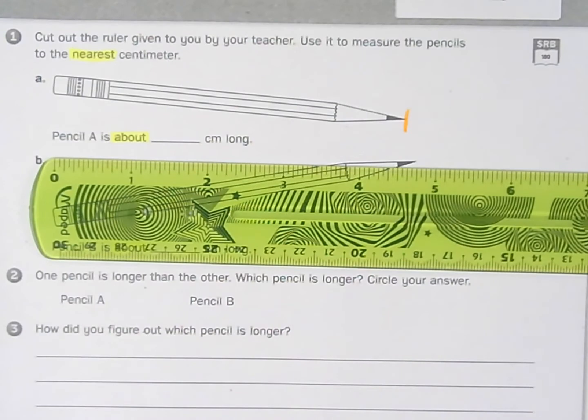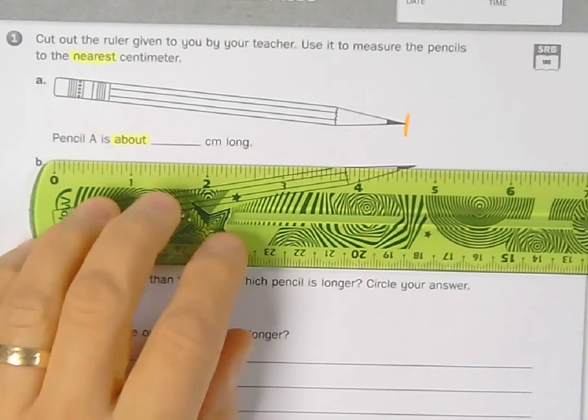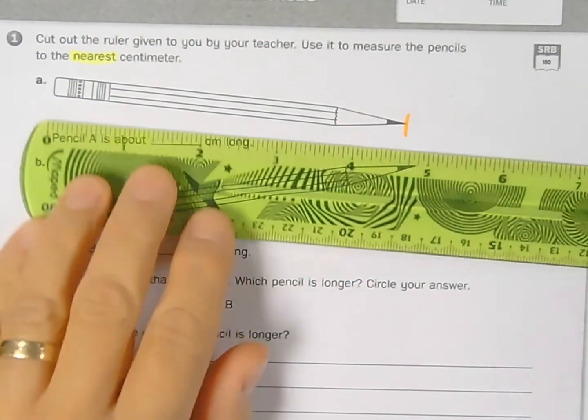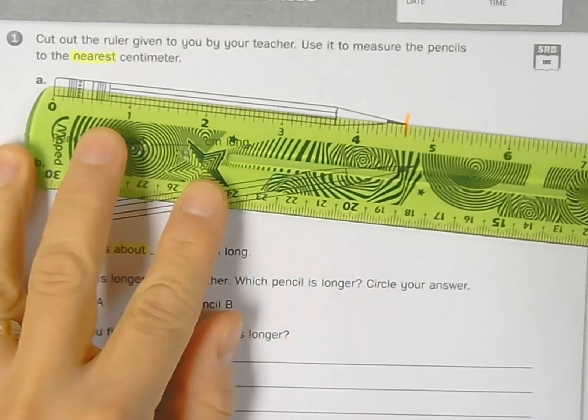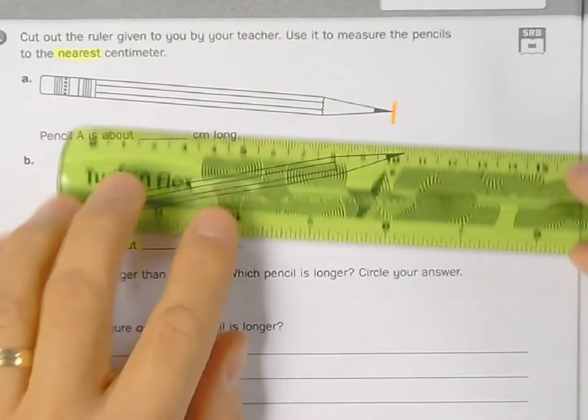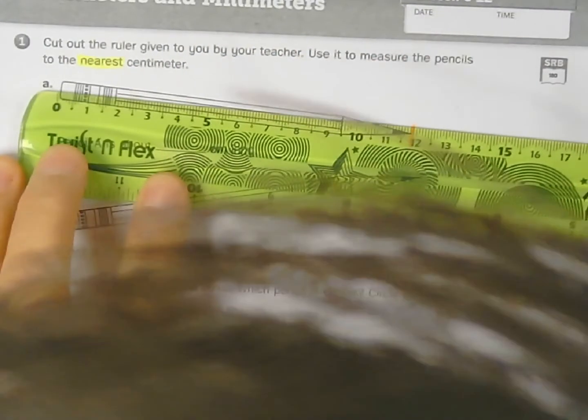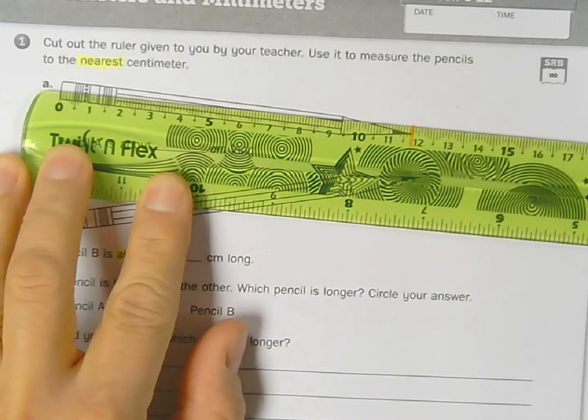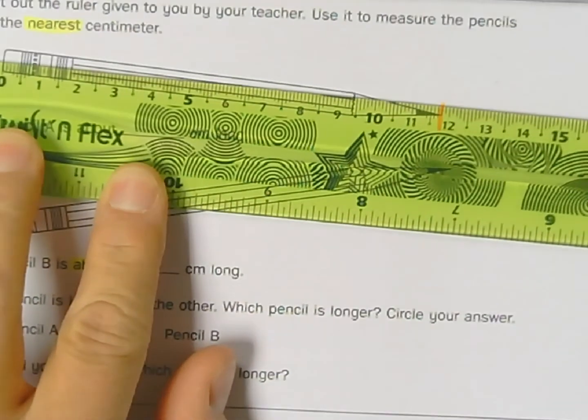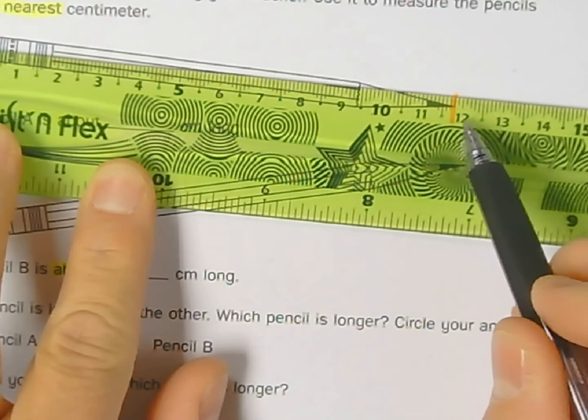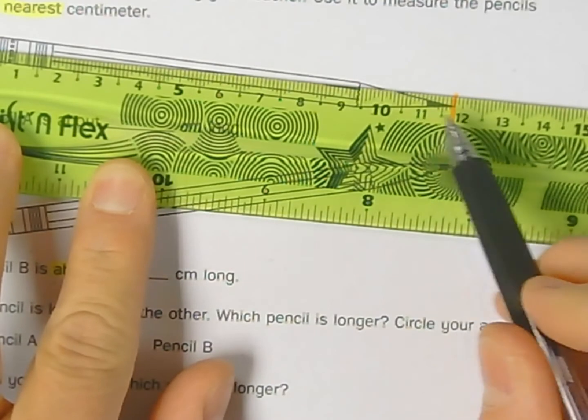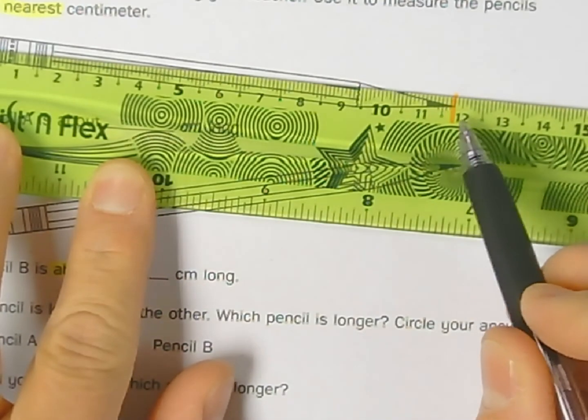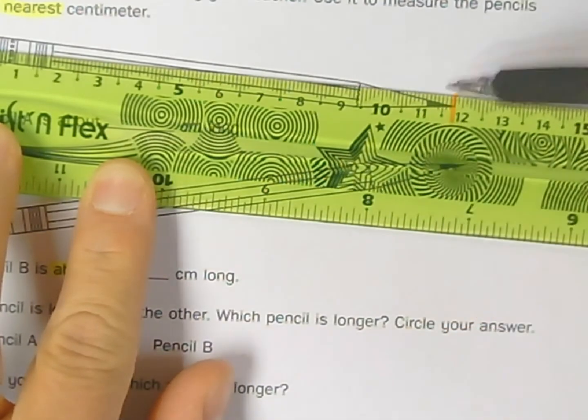Now I'm measuring a pencil that comes to a point so I'm going to use a highlighter to mark off where that point is so it's easier to see through my ruler. So I'm measuring to the nearest centimeter, and if I start at zero and I look at where the marking is, my marking is more than 11 but less than 12, so it's a little bit more closer to the 12 side than it is the 11 side because there's the halfway point. So I'm going to say this is about 12 centimeters long.